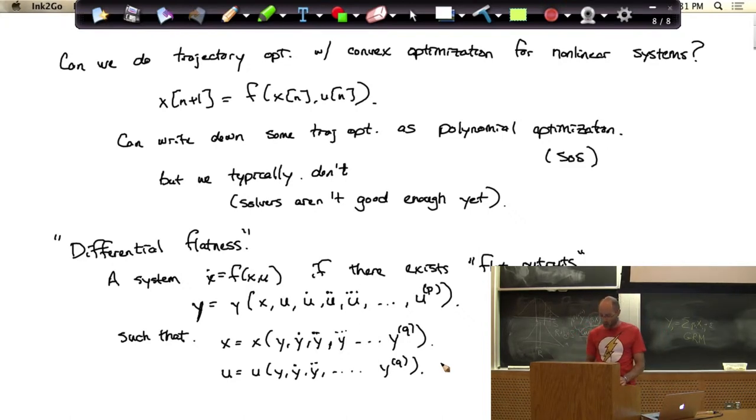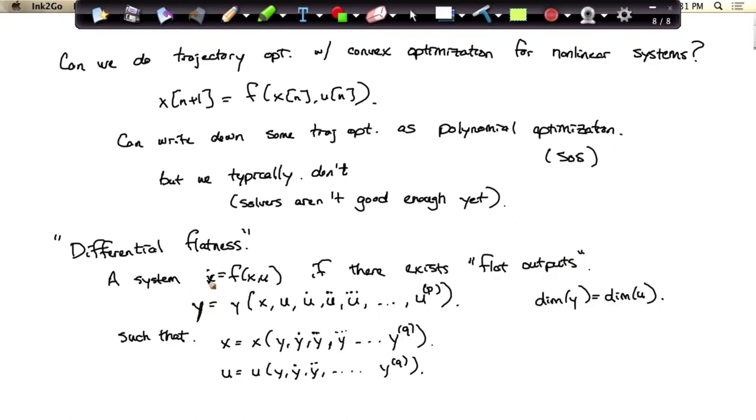Sort of an obtuse thing, but let's run with it. And the key property is that I need to be able to, from just having a trajectory in y, I need to be able to back out the trajectories in my state and in my control inputs. And for this to make sense, you want the dimension of y to be the dimension of u.